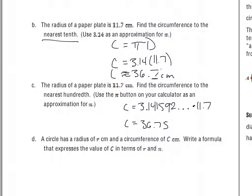We're talking about a difference of 0.1 of a centimeter — that's a millimeter. If you're machining something to work in a car engine, you might need that precision. If you're just measuring a paper plate, it's not as crucial. Using the pi button, the answer is C ≈ 36.8.